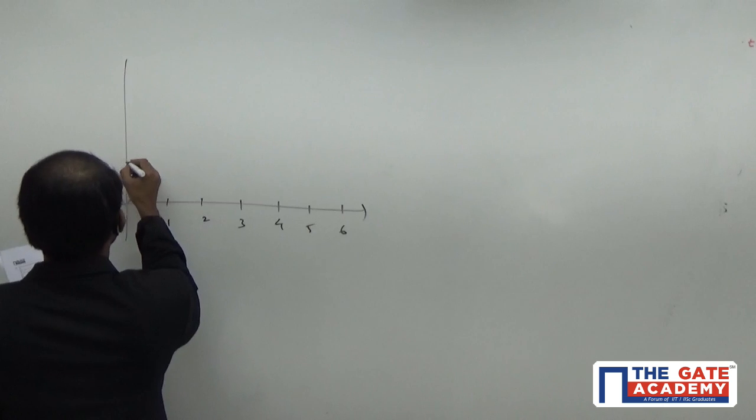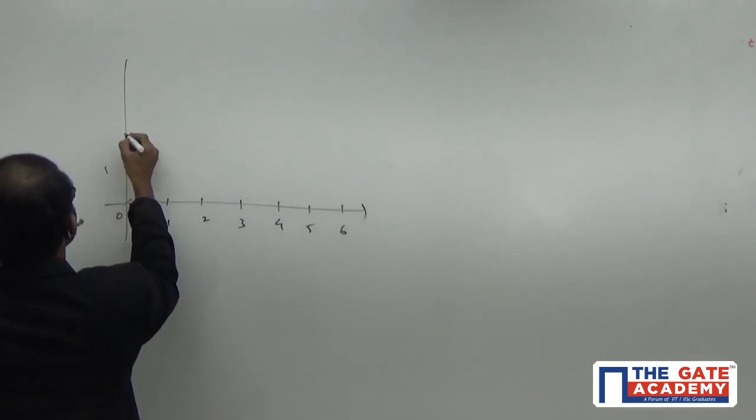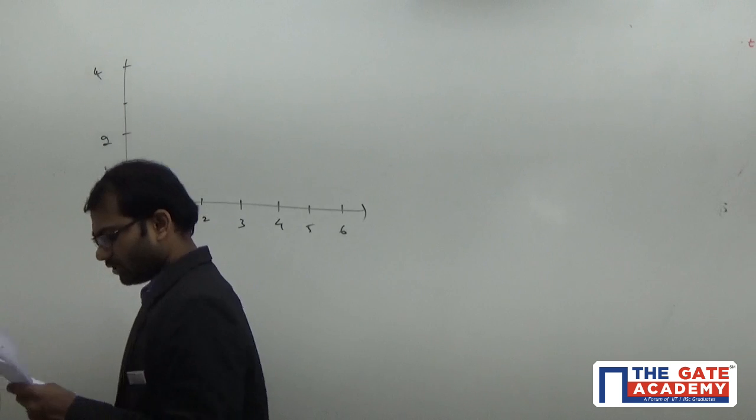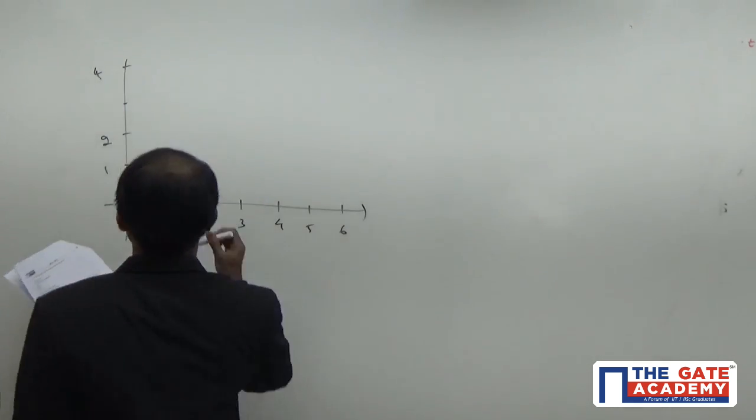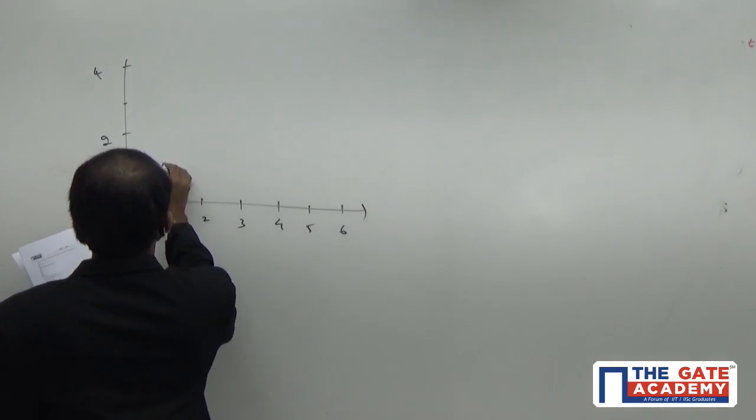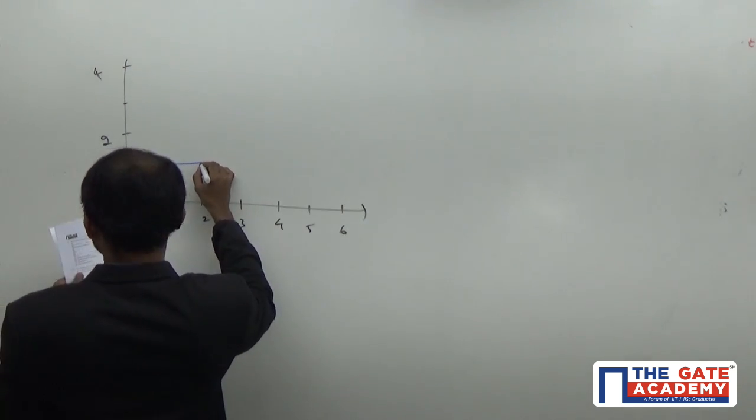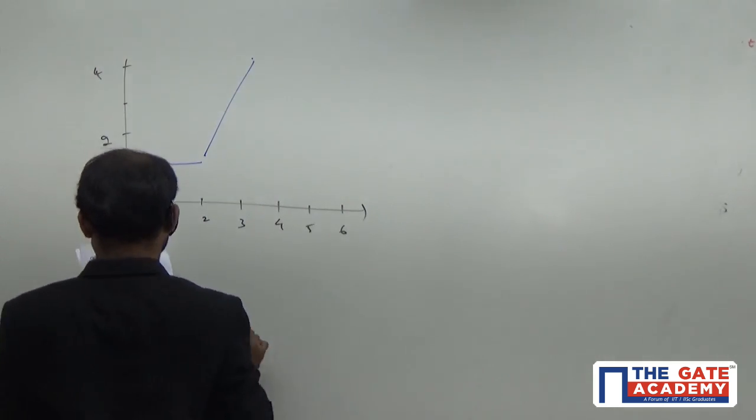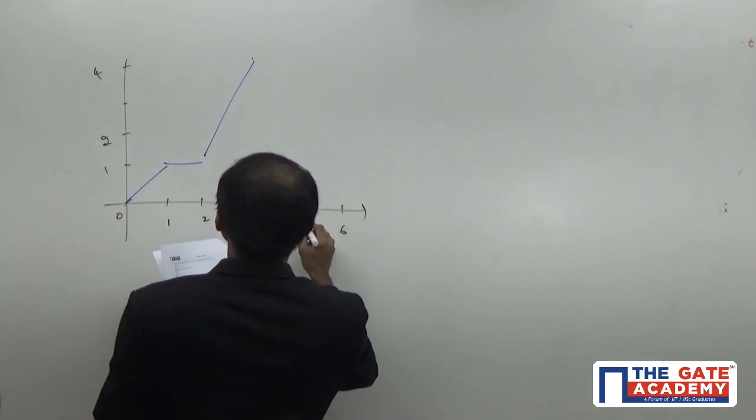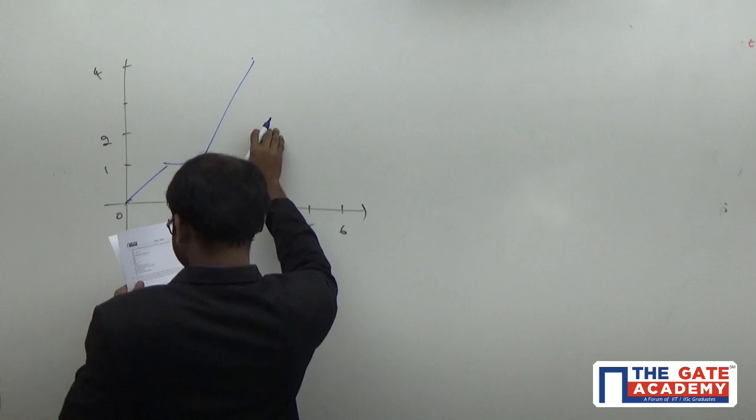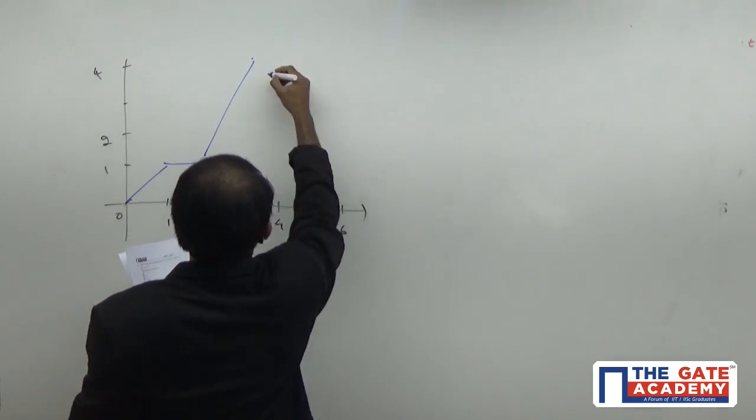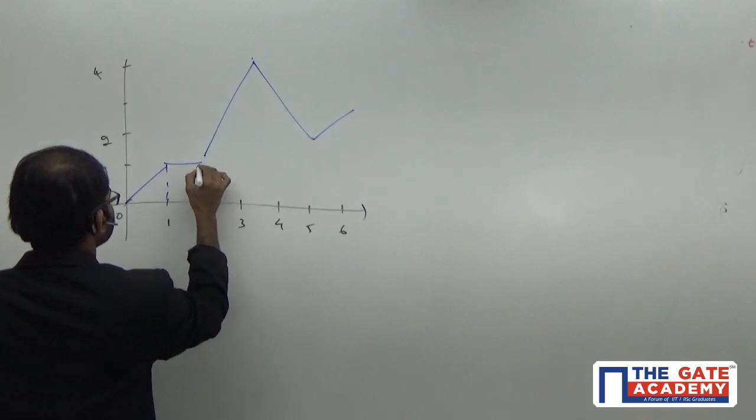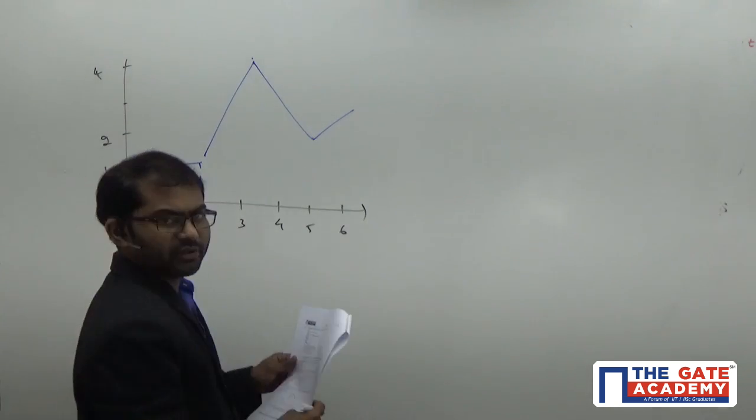1 meters per second, 2 meters per second, 4 meters per second. The curve is varying like this. So, the curve is varying like this.